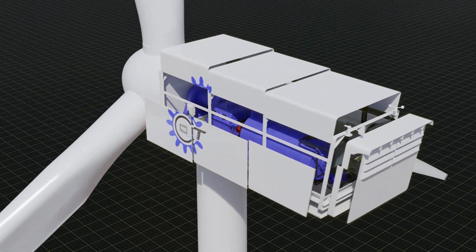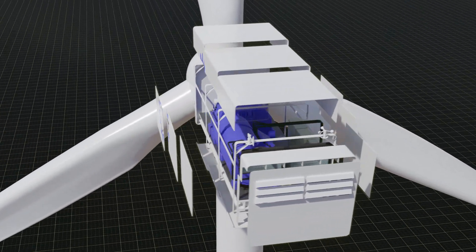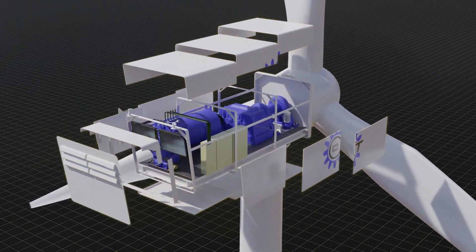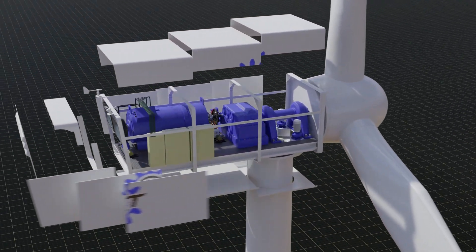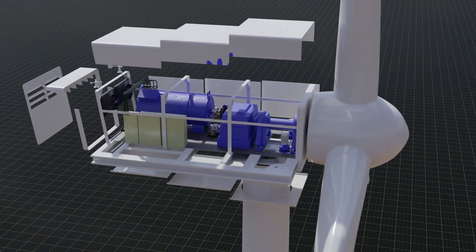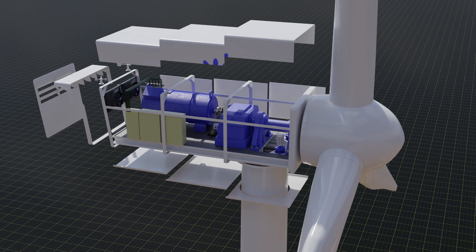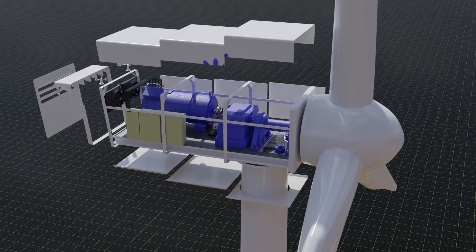Basically the nacelle is a box with internal mechanisms. The box is enclosed by lightweight fiberglass panels that are attached to a metal frame. In turn, the frame is attached to a sturdy metal frame. All of the turbine mechanisms are mounted on the frame.